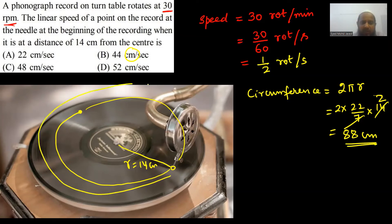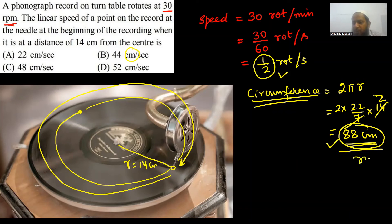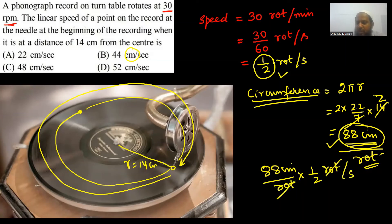After one rotation, 88 cm is finished. We have half rotation. With half rotation, we multiply. 88 cm per rotation multiply it by half rotation per second. Rotation cancels. This gives us 44 cm per second. This will be the speed. So basically, answer is B.